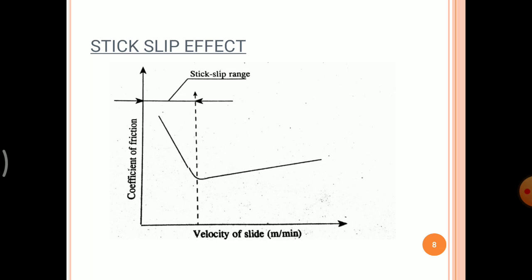In this diagram, we can see that the coefficient of friction is along the y-axis and velocity of the slide is along the x-axis as shown in the figure. When initially the coefficient of friction is high, it decreases as the velocity of the slide increases. The coefficient of friction is high when the movement begins and reduces as the speed of movement increases. Therefore, to start the movement, a high force is required to overcome the friction — this phenomenon is called stick-slip phenomena.